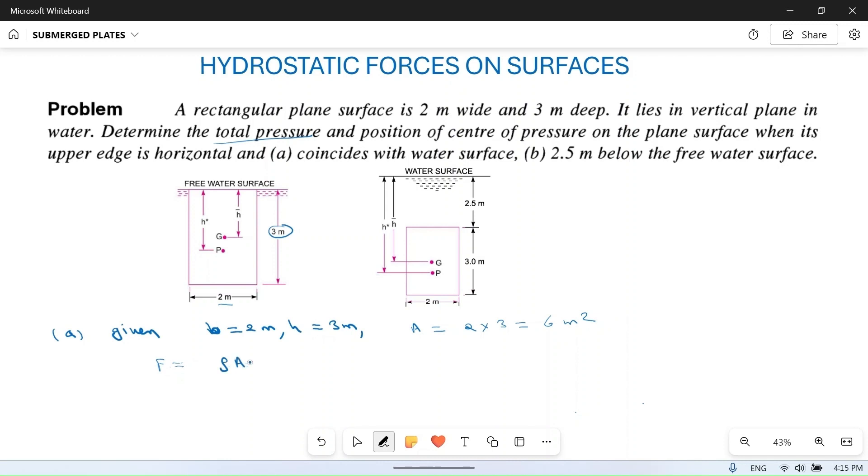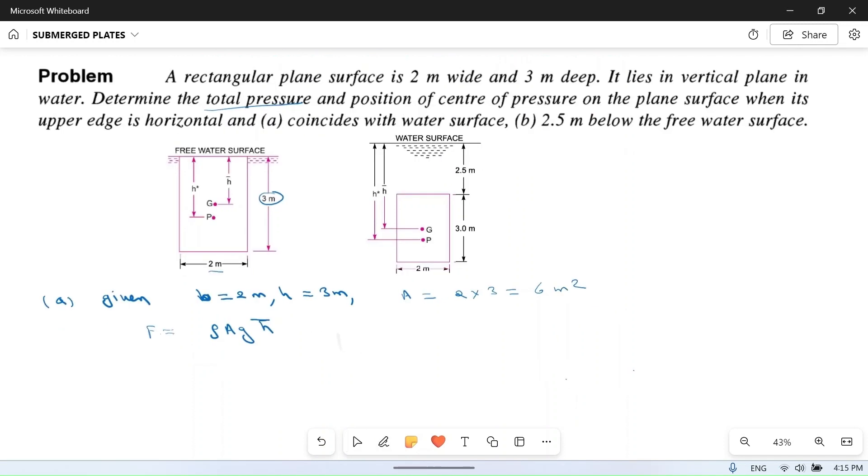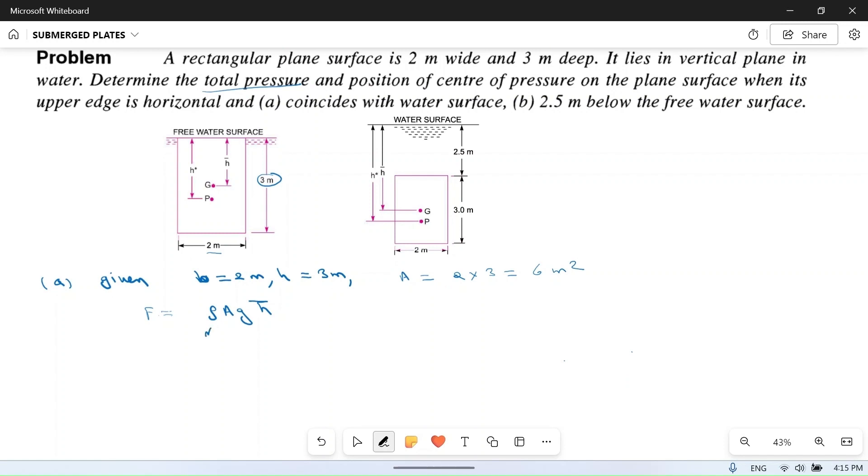Total pressure or force is given as F = ρ·A·g·h̄. You can find this formula derivation in any standard book, where ρ is density of the liquid, A is the area of the plate, g is acceleration due to gravity, and h̄ is the distance of the center of gravity of this plate from free surface.